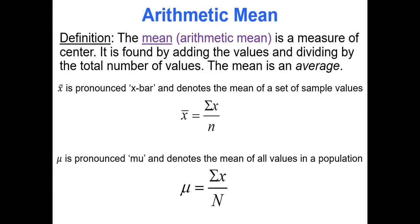When I talk about the mean, or the arithmetic mean — because there are different types of means — the mean is a measure of center. It's found by adding up your data values and dividing by how many you have. The mean is a type of average. We use x-bar, x with a bar on top, to denote the mean of a sample.